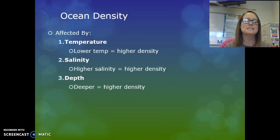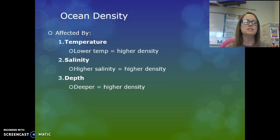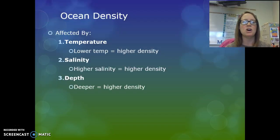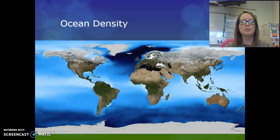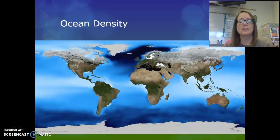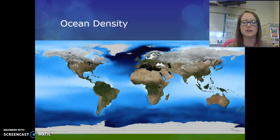Ocean density is affected by three different factors: temperature, salinity, and depth. Lower temperatures result in higher density. The more salt in the water, the more dense it is. And the deeper it is, the more dense it is, because all of the particles are under the weight of the water above, which compacts them together. Looking at a map of ocean density, the dark blue areas towards the north and south poles have the highest density because they have the coldest temperatures and higher salinities due to the amount of sea ice. At the equator, we have lower densities because of the higher temperatures from greater sunlight.